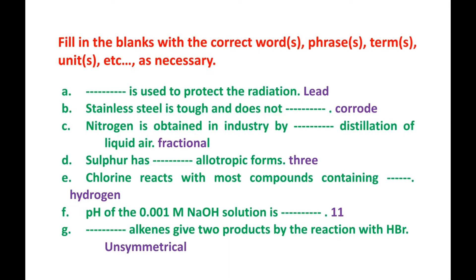Number D. Sulfur has blank allotropic forms. Allotropic forms exist when an element has multiple forms. Sulfur has three allotropic forms.